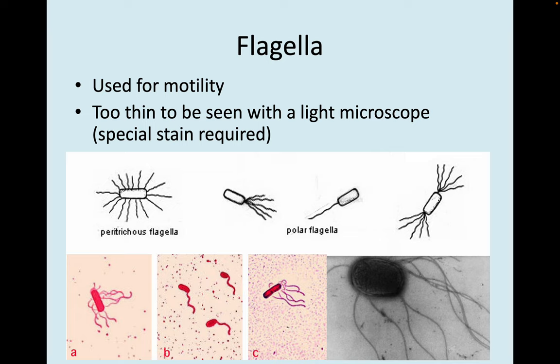Some cells also have flagella, which are used for motility. They're usually too thin to be seen with a light microscope without using a special stain, but you can see some examples here.